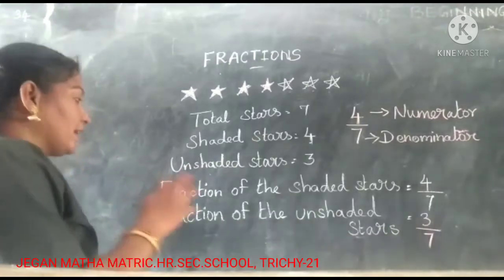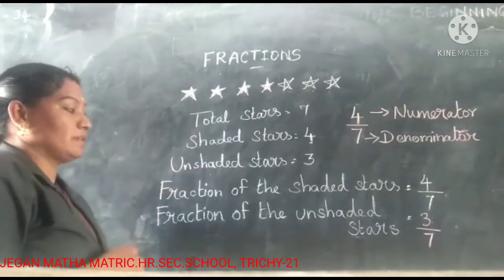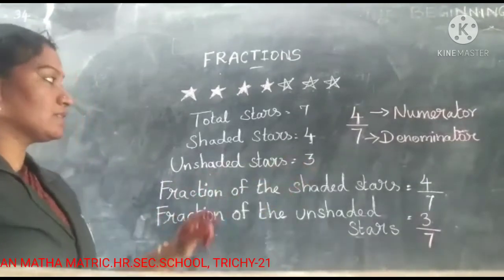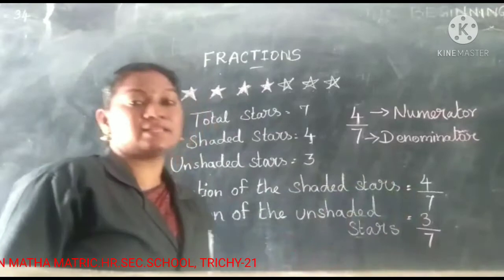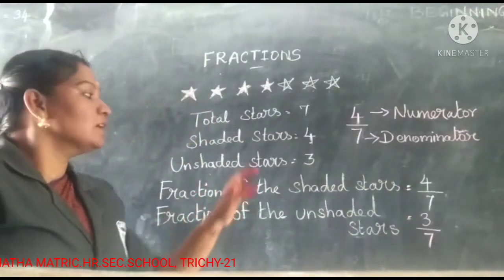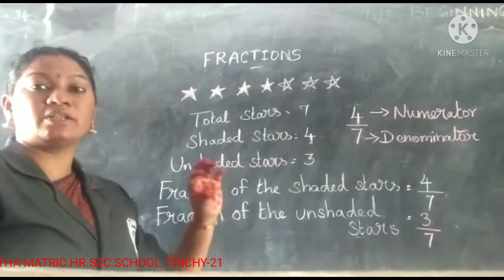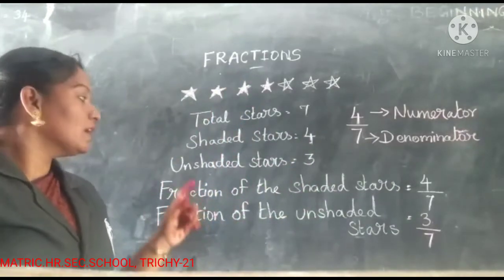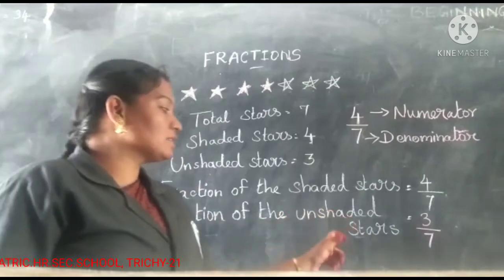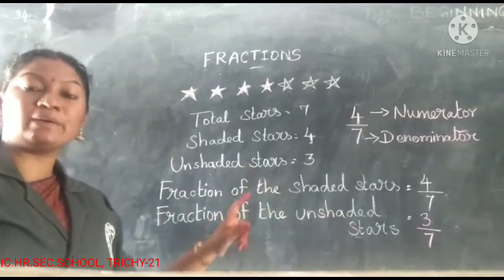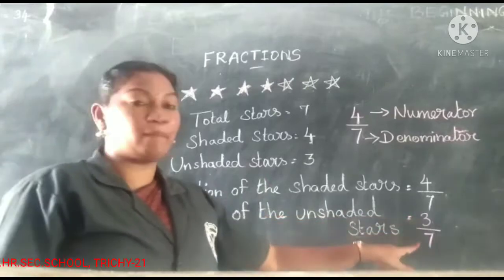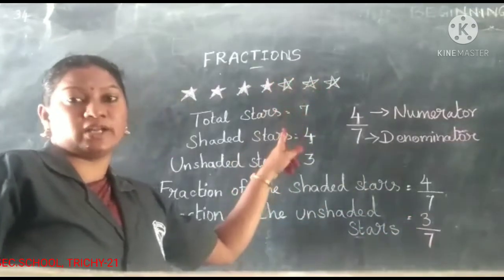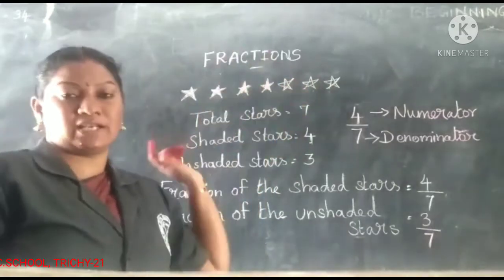Now we make the fraction from this given data. The fraction of the shadowed stars is 4 by 7, which means 4 stars are shadowed out of 7 stars. The fraction of the unshadowed stars is 3 by 7, meaning 3 stars are unshadowed in the whole 7 stars.